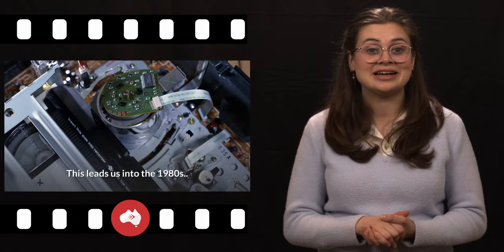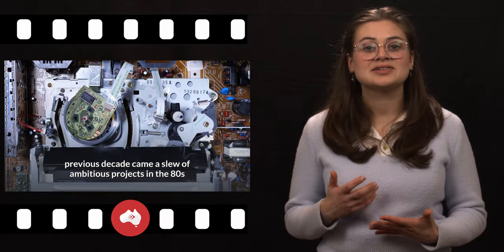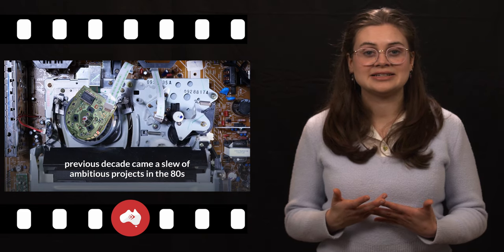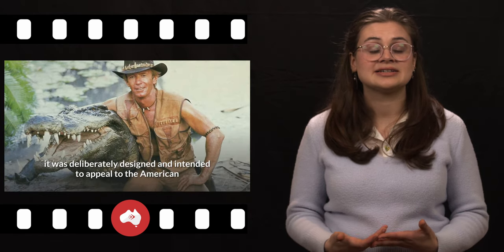This leads us into the 1980s. Riding high on Australia's increasing profile born in the previous decade came a slew of ambitious projects in the 80s, such as 1986's Crocodile Dundee, directed by Peter Faiman and starring Paul Hogan. About an American reporter who goes to the Aussie outback to meet a quirky crocodile poacher, it was deliberately designed and intended to appeal to the American market with a $10 million budget and very commercial-friendly values. The flick succeeded in what it set out to do, becoming the highest grossing film of all time in Australia and the highest grossing Australian film worldwide, turning into somewhat of a global phenomenon.